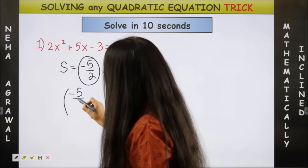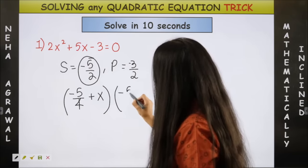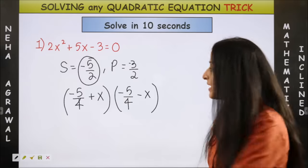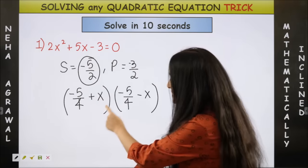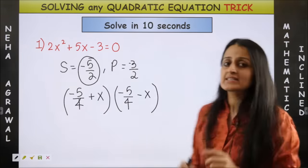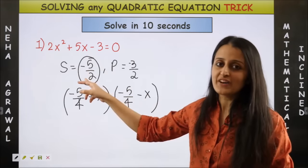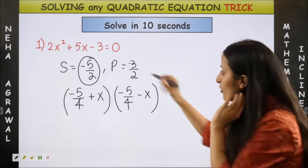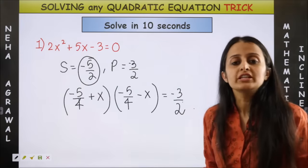So minus 5 by 4 just add the factors plus x and minus x. So now my factors have become minus 5 by 4 plus x and minus 5 by 4 minus x. Why? Because when you add them up you will get minus 5 by 4 minus 5 by 2 and the idea is when you take their product it should give you this. That's all what we need to solve.